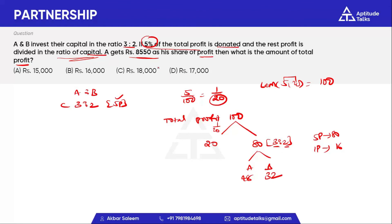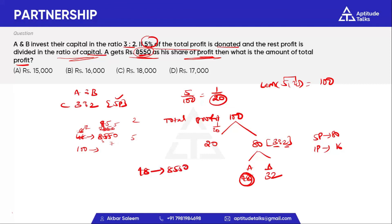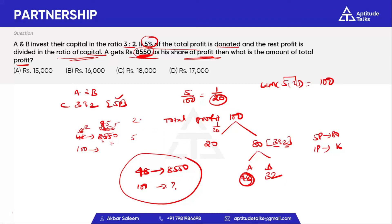A gets 8,550 rupees as share of profit. We use A's share to find the total profit. 100 parts corresponds to the total profit. Using the same procedure, if A's share is 48 parts equal to 8,550, the total profit of 100 parts can be calculated.